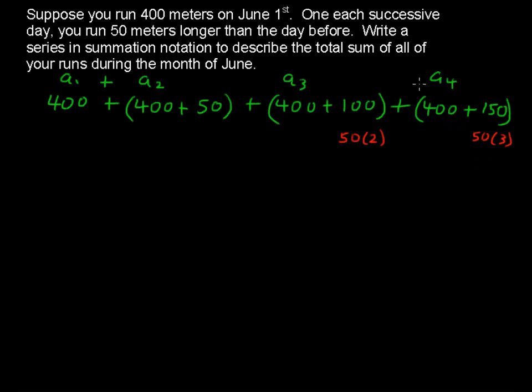Or in other words, I've got a 4 here and I have a 3 here. So this is 50 times n minus 1, where n is that number of the term in this series.